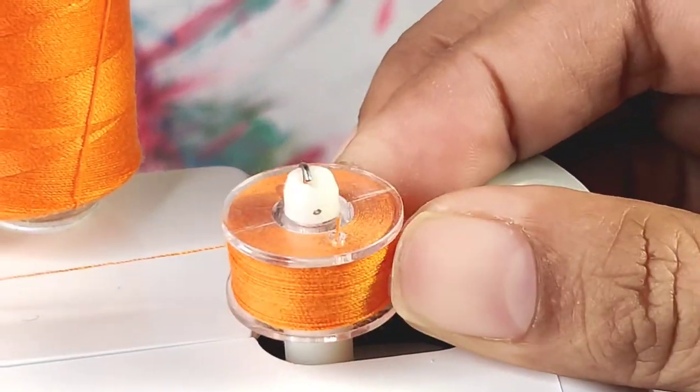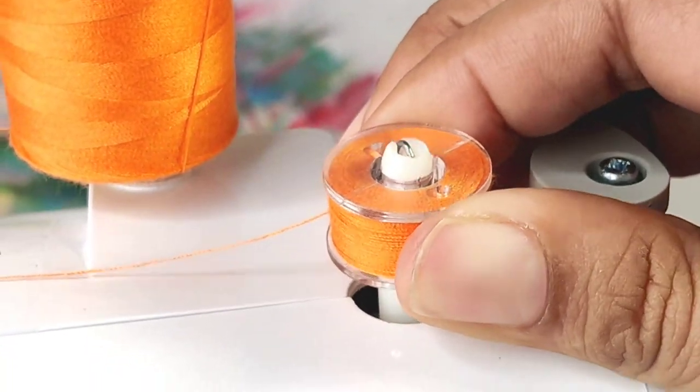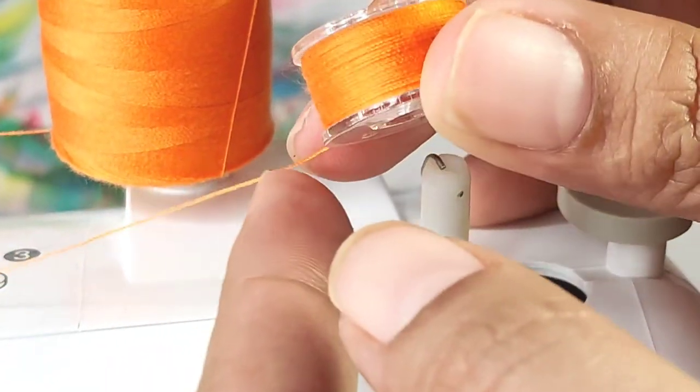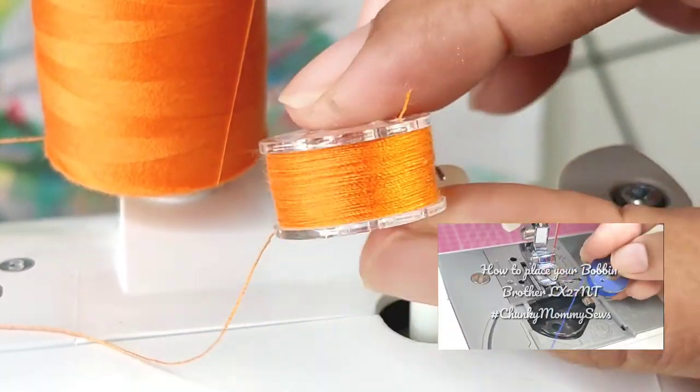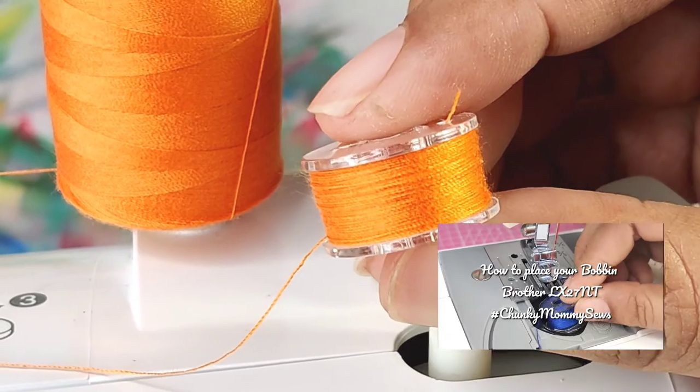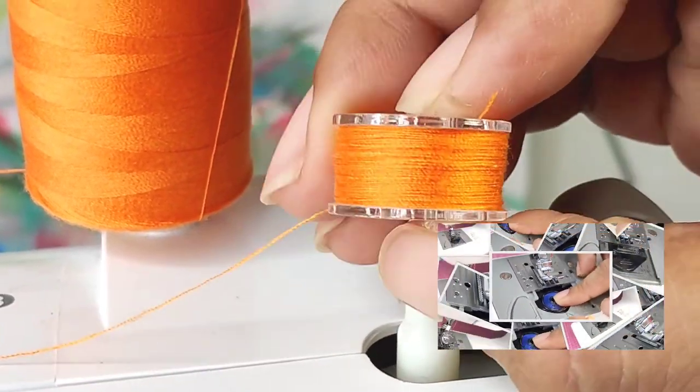Here's our fully wound bobbin. Cut the thread and place it in the bobbin case. If you like to see how to place it correctly, check out my video, How to place your bobbin for more tips. That ends this tutorial.